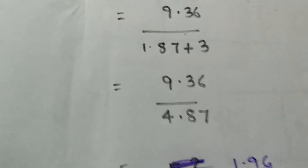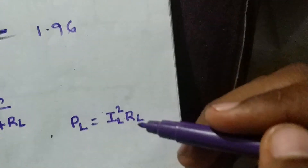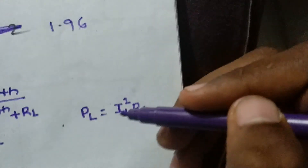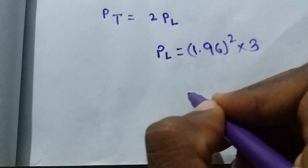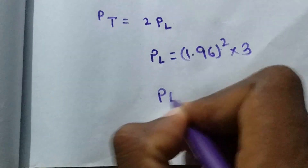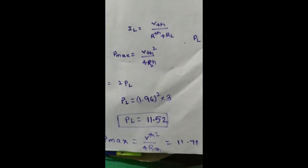So IL is approximately 1.96 amperes. Using this, we find PL. The formula is PL equals IL squared into RL. So PL equals 1.96 squared into 3 ohms, which gives PL equals 11.52 watts.